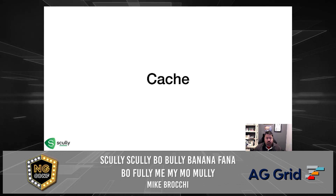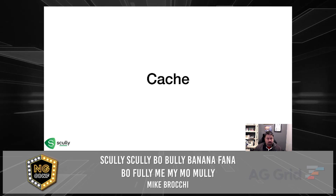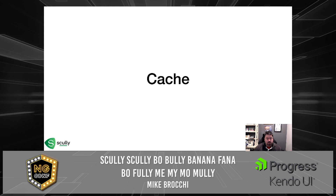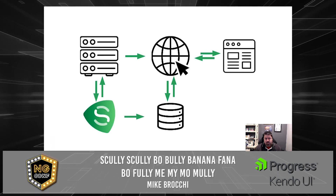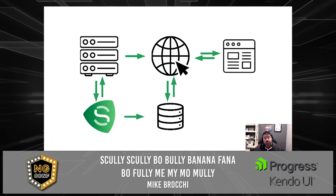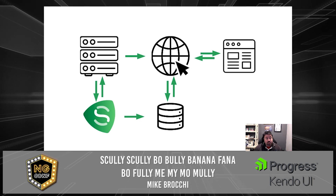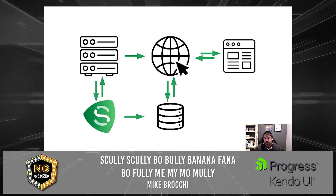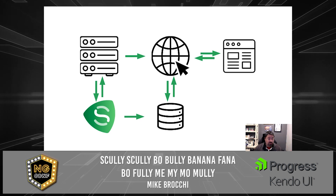First, I want to talk about cache. But before we talk about cache, let's discuss a little bit about how Scully works. Your build output will sit in the disk directory, and that's what Scully runs against — your outputted application. It essentially traverses your application's routes to render each individual route within the application based upon your Scully configuration.